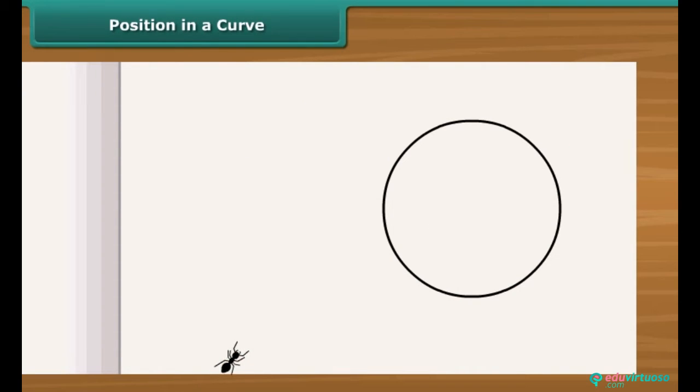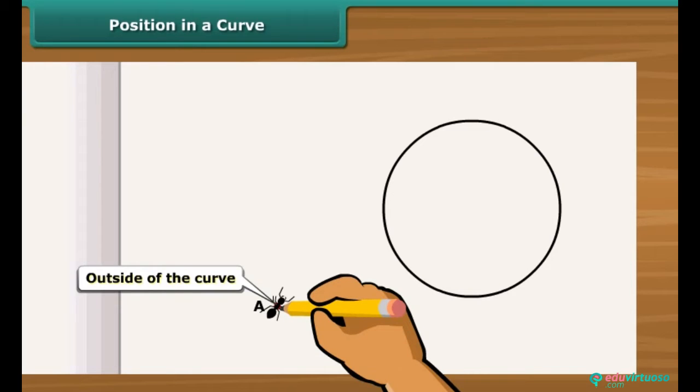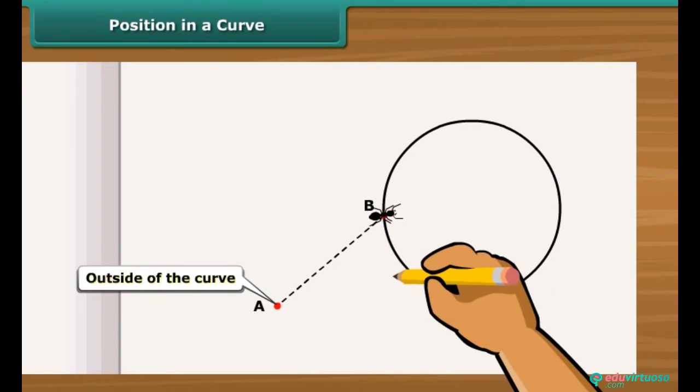Here you see a moving ant. With reference to a closed curve at position A, the ant is at exterior or outside of the curve. At position B, it is on the boundary or on the curve.